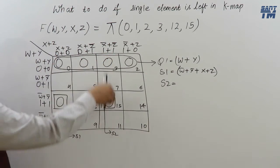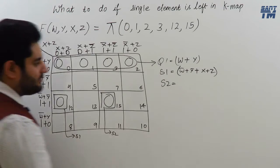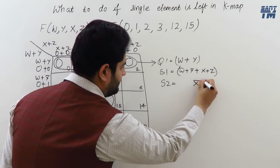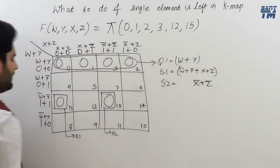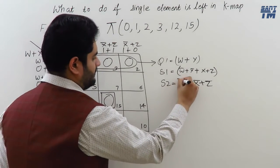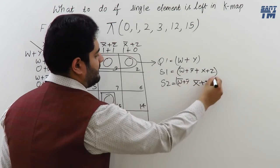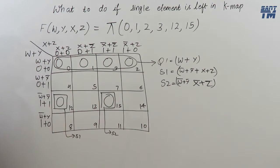For single 2, this column is fully included. So, X bar plus Z bar will come. And, this row is fully included. So, W bar plus Y bar will also come. These are the sums or the terms for all the groups.